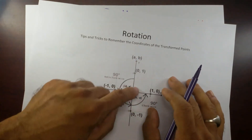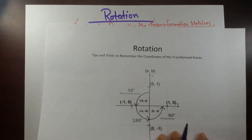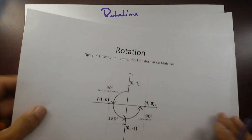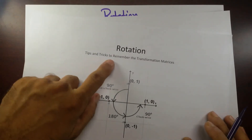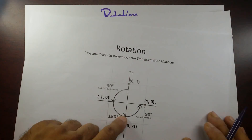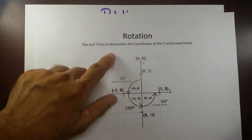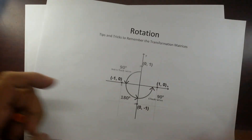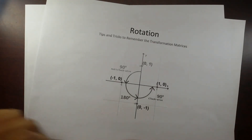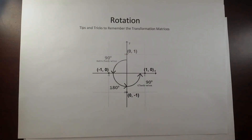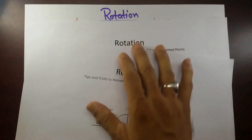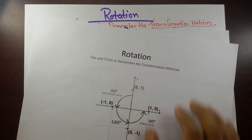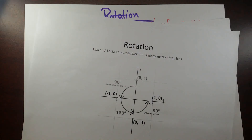So this is how you remember the coordinates formula. I hope you liked it. These are tips and tricks to remember the transformation matrices and the coordinates of the transformation point. I'll see you in the next video with tips and tricks for reflection — how to remember the transformation matrix and the coordinates. Thank you, have a good day.